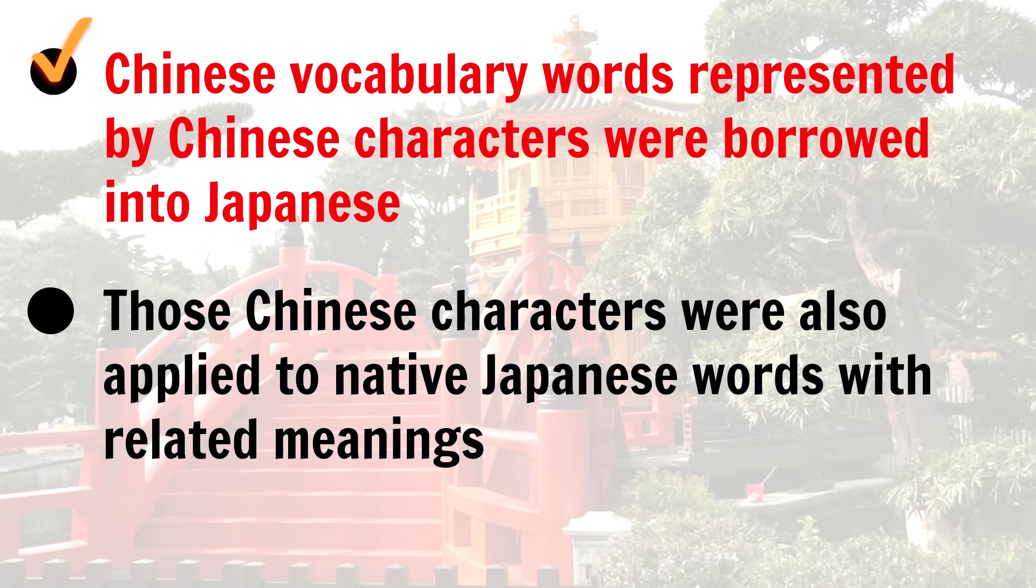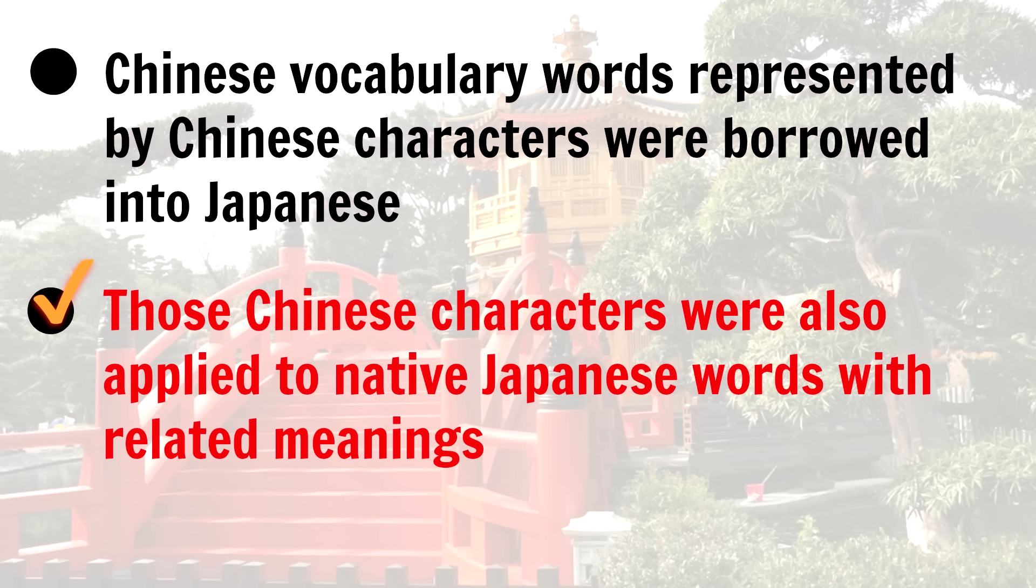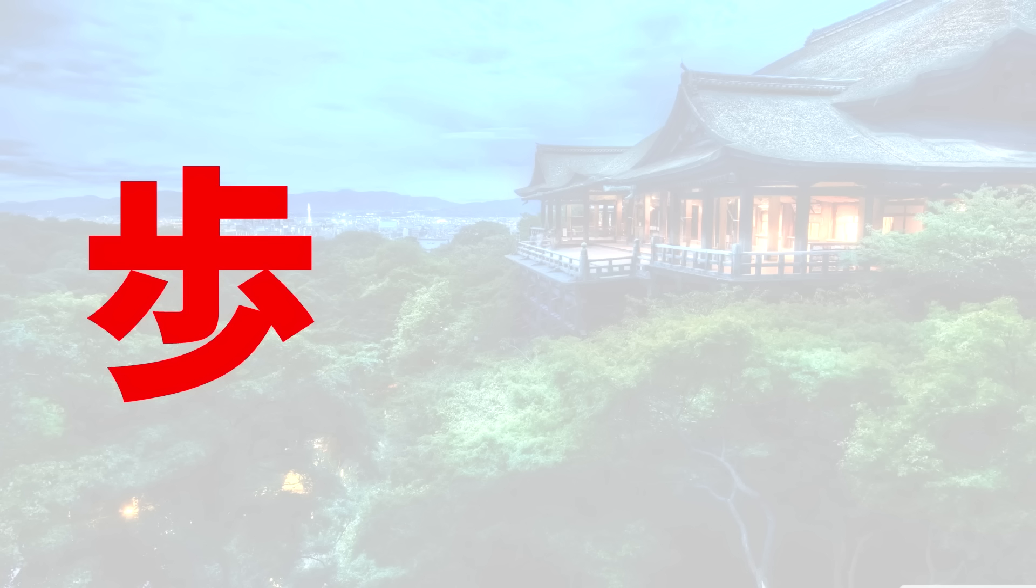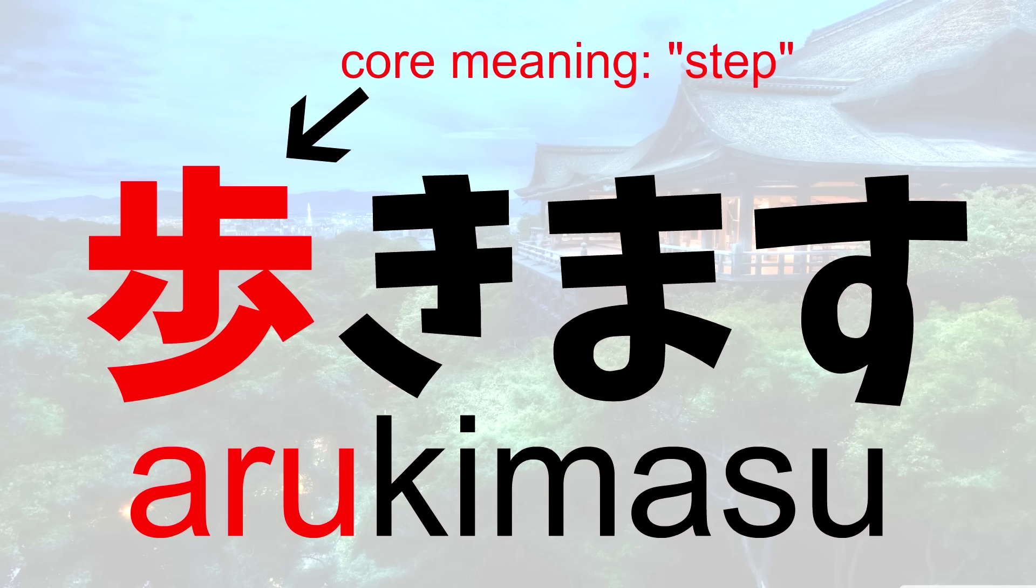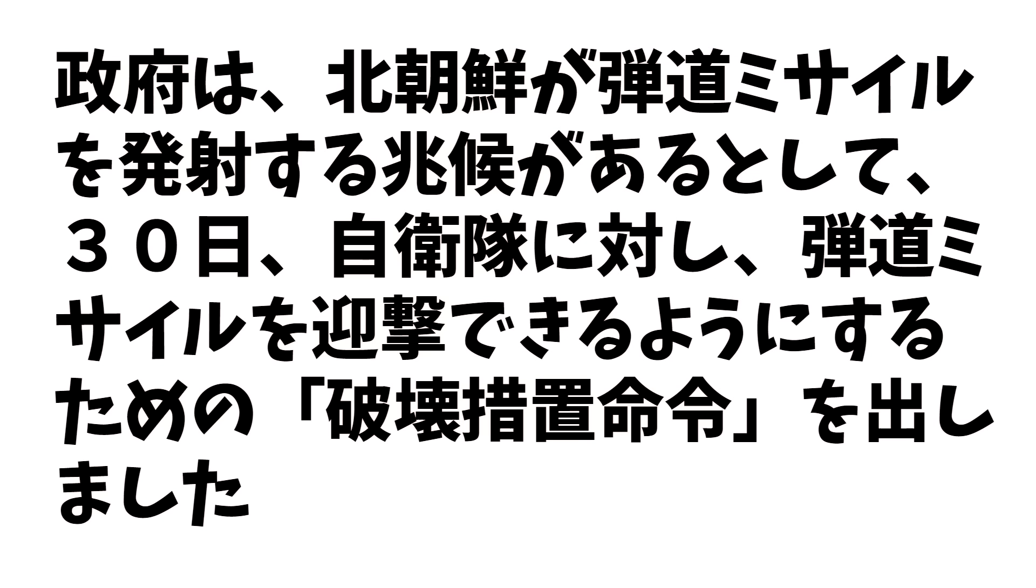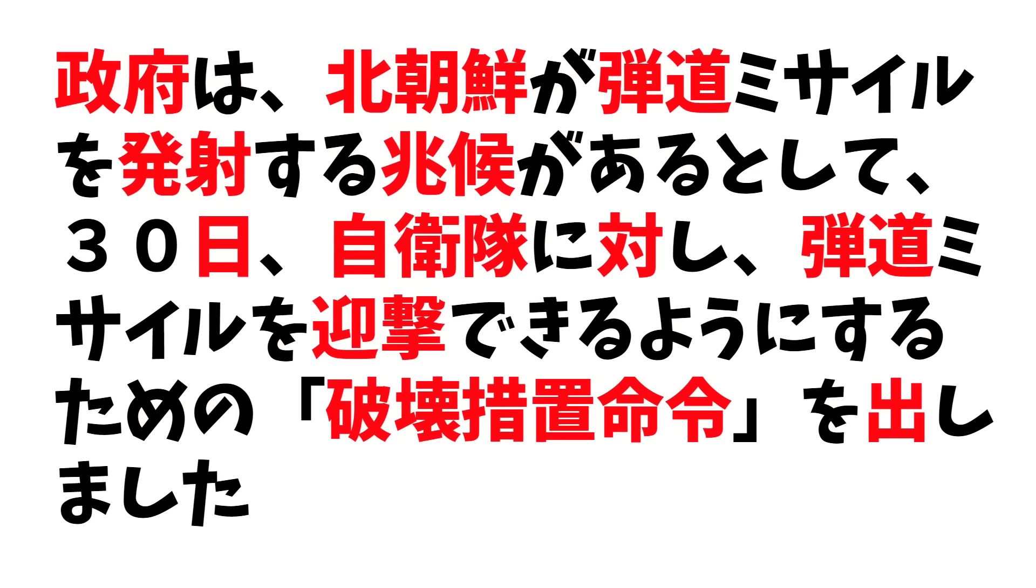So Chinese vocabulary represented by Chinese characters were borrowed into Japanese, but those Chinese characters were also then applied to native Japanese vocabulary that had a related meaning to those Chinese loan words. That means that a Chinese speaker can often look at a native Japanese word and understand its core meaning without knowing that Japanese word, because the Chinese character is used to represent it. So Chinese people can often read a text in Japanese and they can make sense of the basic meaning of it based on the Chinese characters, but they won't understand all the details.